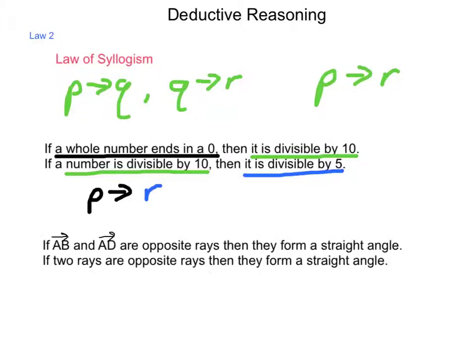Let's try another. If ray AB and ray AD are opposite rays, then they form a straight angle. If two rays are opposite rays, then they form a straight angle. What can we work from this? Well, we have the statement AB and AD are opposite rays. Given this conclusion, they form a straight angle.